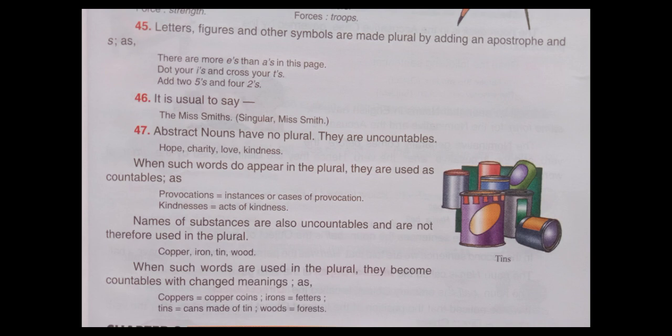Letters, figures, and other symbols are made plural by adding an apostrophe and S, as: There are more A's than E's in this page. Dot your I's and cross your T's. Add two 5's and four 2's. It is not evil to say the Miss Smiths, singular Miss Smith.